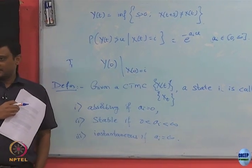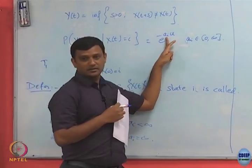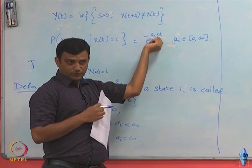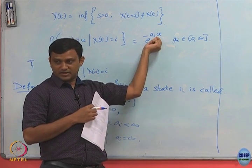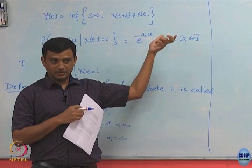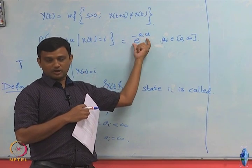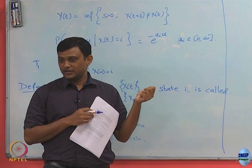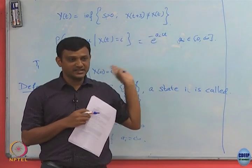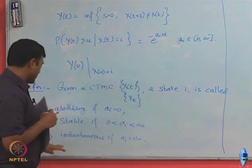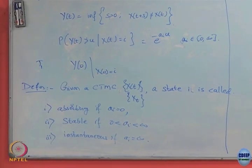When ai equals infinity, for any value of u, however small, the probability that the Markov chain stays in that state is 0. You can take u arbitrarily close to 0 and the probability is still 0. This means the chain leaves that state instantaneously — it cannot stay there for any positive duration — which is why we call it instantaneous.